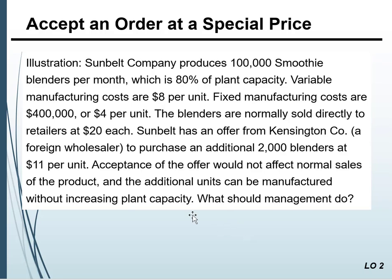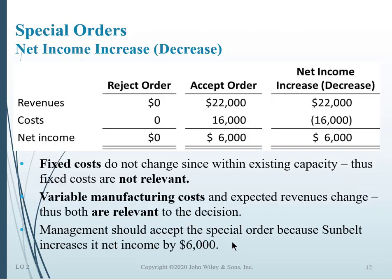Here's an example. We produce 100,000 blenders, which is 80% of our plant capacity, so we're under capacity. Variable manufacturing costs are $8 per unit, fixed manufacturing costs are $400,000 — roughly $4 per unit. The blenders are normally sold directly to retailers at $20 each. Now we've gotten an order from Kensington to purchase an additional 2,000 blenders, but they only want to pay $11 per unit — a pretty substantial dip in price. Should we go through with this proposal?